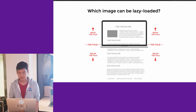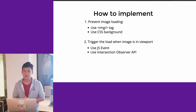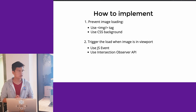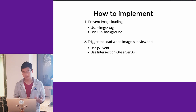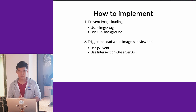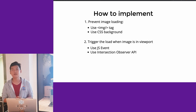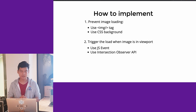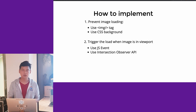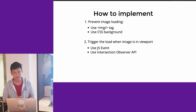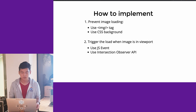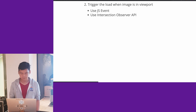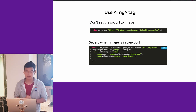How can we implement this technically? There are two steps. First, we need to find a way to prevent the image from being downloaded by the browser — this can be done using the HTML image tag or CSS background image. Second, we need to detect if that image is in the viewport or not, and then download and render it in the browser. This can be done through JavaScript scroll events or using the new Intersection Observer API, which I'll discuss in detail later.